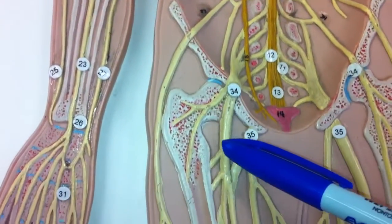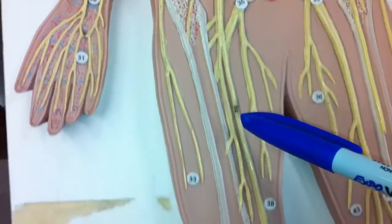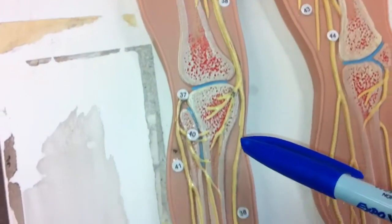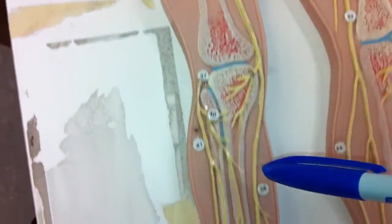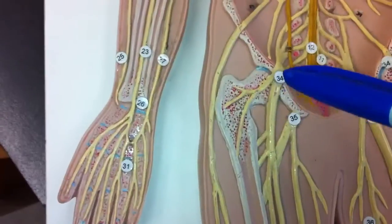So this frontal one will actually be the femoral. The femoral will go down. It will be the saphenous nerve and the femoral up here.